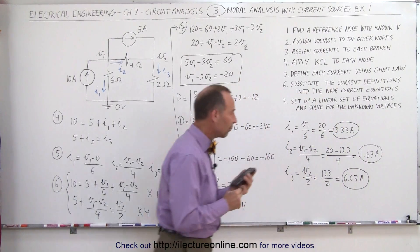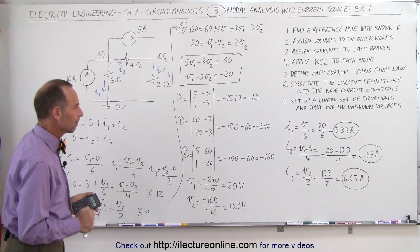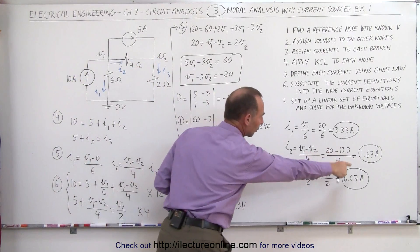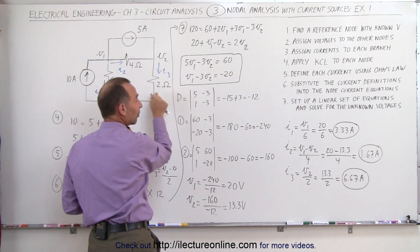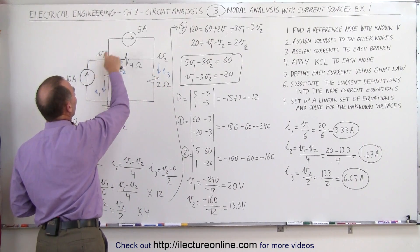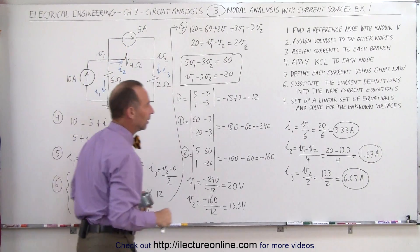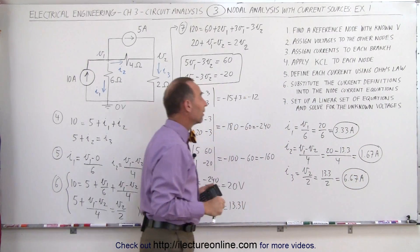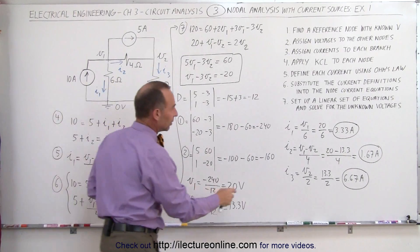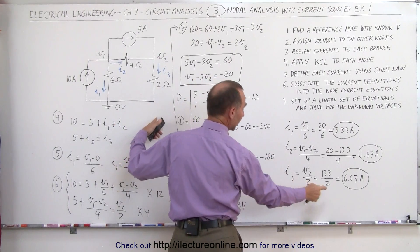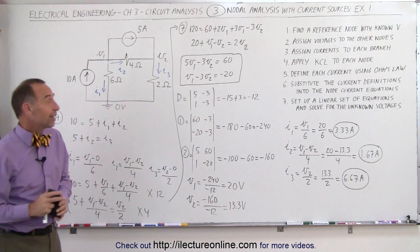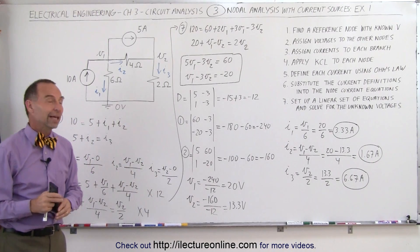I3 equals V2 divided by 2, which is 13.3 divided by 2, equal to 6.67 amps. Let's do a quick check: I3 should equal the 5-amp source plus I2. Indeed, 5 plus 1.67 equals 6.67 amps. Also, 10 amps should equal 5 plus I1 plus I2, which checks out. I1 plus I3 together also sums correctly to 10 amps. Everything checks out — we have the correct voltages and currents.